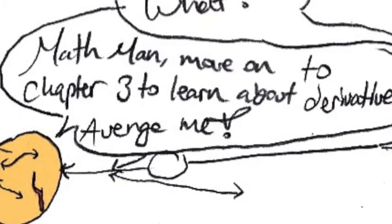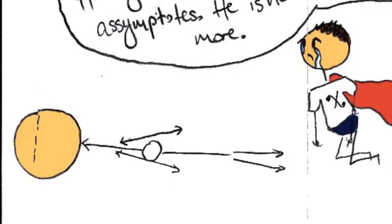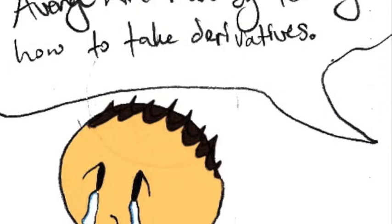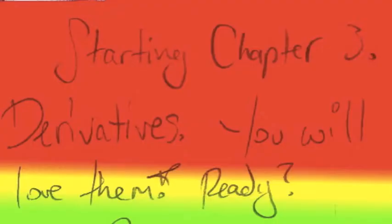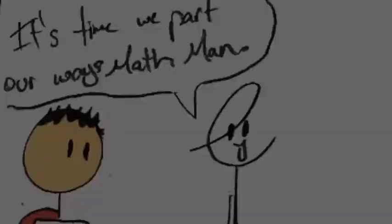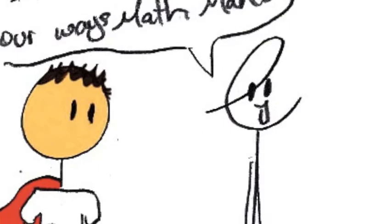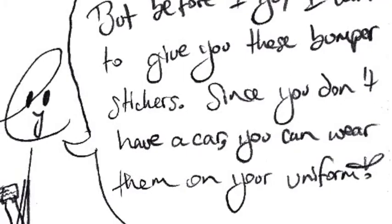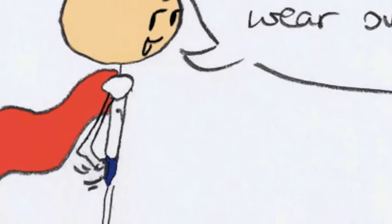His eyes are horizontal asymptotes. He is no more. Remember what you learned in chapter 2. Avenge Lineman by learning how to take derivatives. Starting chapter 3. Derivatives. You will love them. Ready? Go! It's time we part our ways, math man. But before I go, I want to give you this bumper sticker. Since you don't have a car, you can wear them on your uniform. Uh, thanks, The Limit. No problem. I'll just put it on the underwear that I wear over my pants. Sweet. Now I'll introduce you to your new teacher, Mrs. Derivative.